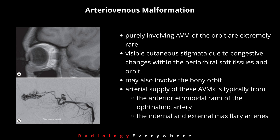Arteriovenous malformations (AVMs) purely involving the orbit are extremely rare, resulting in visible cutaneous stigmata due to congestive changes within the periorbital tissue and orbit. They may also involve the bony orbit. The arterial supply is typically from the anterior ethmoidal rami of the ophthalmic artery or internal or external maxillary arteries. When AVMs involve the retina and midbrain, the terms congenital unilateral retinocephalic vascular malformation syndrome, Bonnet-Dechaume-Blanc syndrome, or Wyburn-Mason syndrome describe this neurocutaneous syndrome.